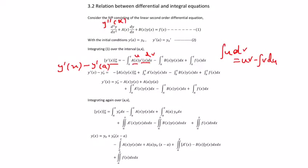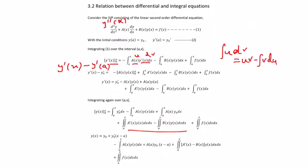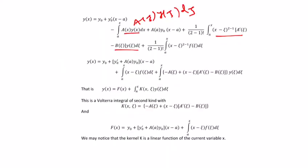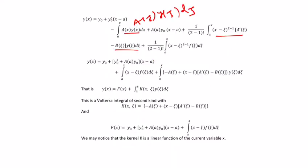Now we are going to combine these two terms, because y(x) is common. So you get a dash(x) minus b(x), times y(x), dx dx. The last term is the same. Then you'll get y(x) equal to y naught plus y naught dash times (x minus a), minus the integral of a(x) y(x) dx — the same thing. The next term is also the same.